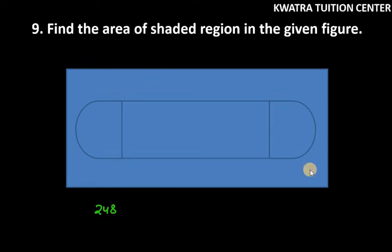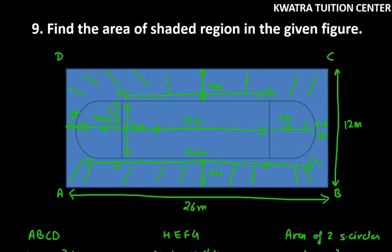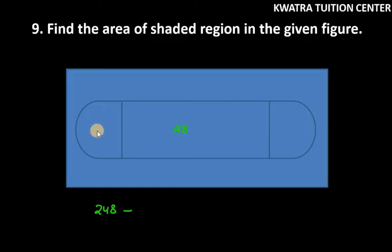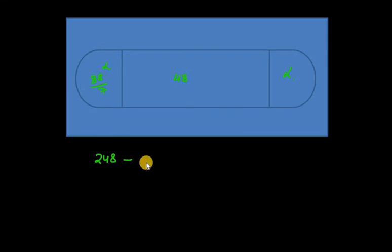So this is 248. The outer one is 248. This is 48. And mix of semicircles is 88 over 7. The total semicircle, the region for semicircle covers 88 over 7 centimeter square. So we have to remove 48, we have to remove 88 over 7. So 248 minus 48 is 200. 200 minus 88 over 7.